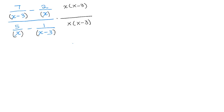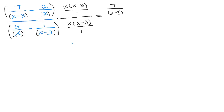We need to do the distributive property here in the numerator and in the denominator. So I have 7 over (x minus 3) times x times (x minus 3), minus 2 over x times x times (x minus 3).